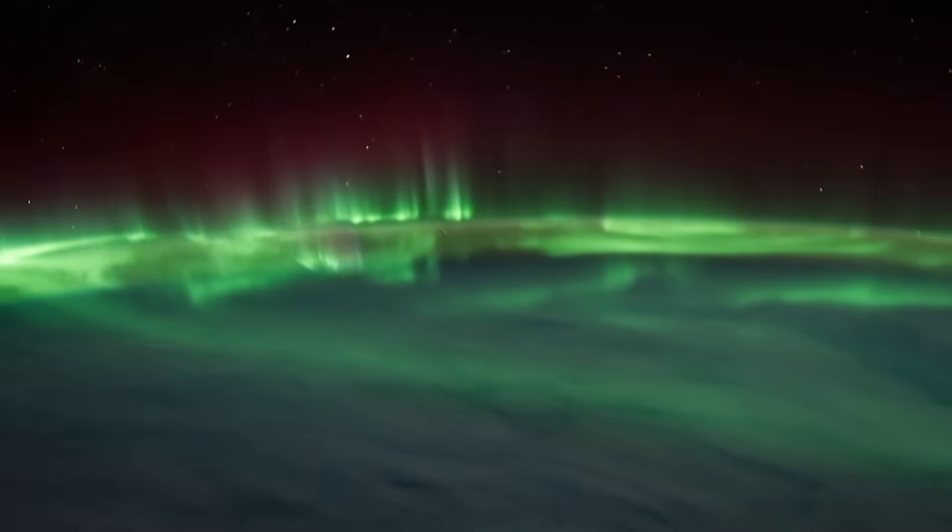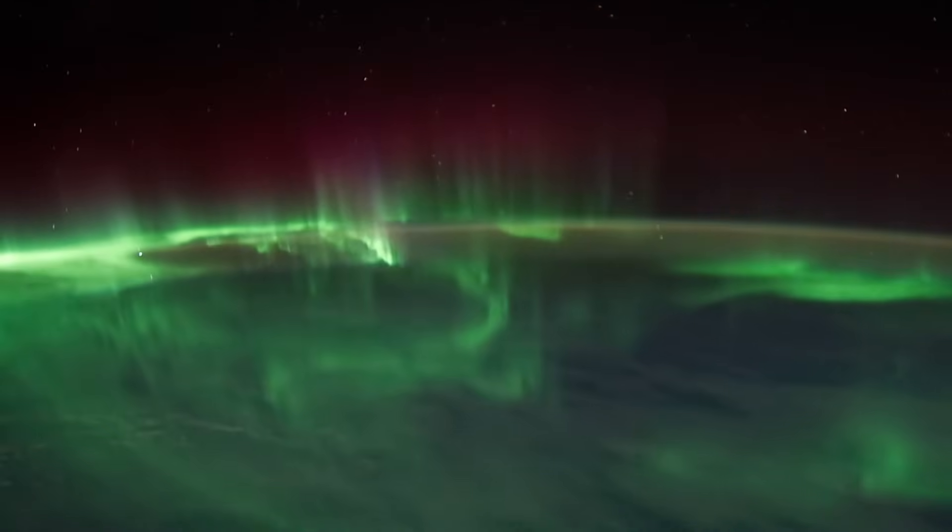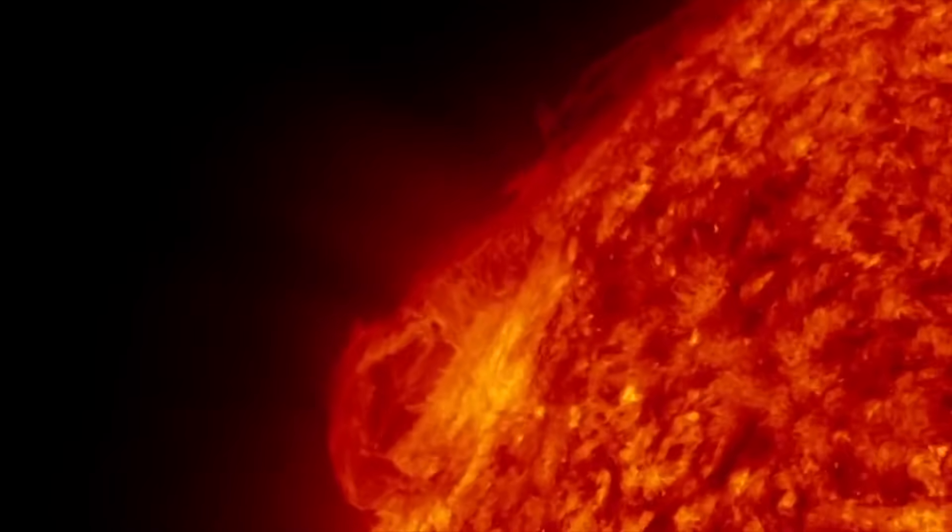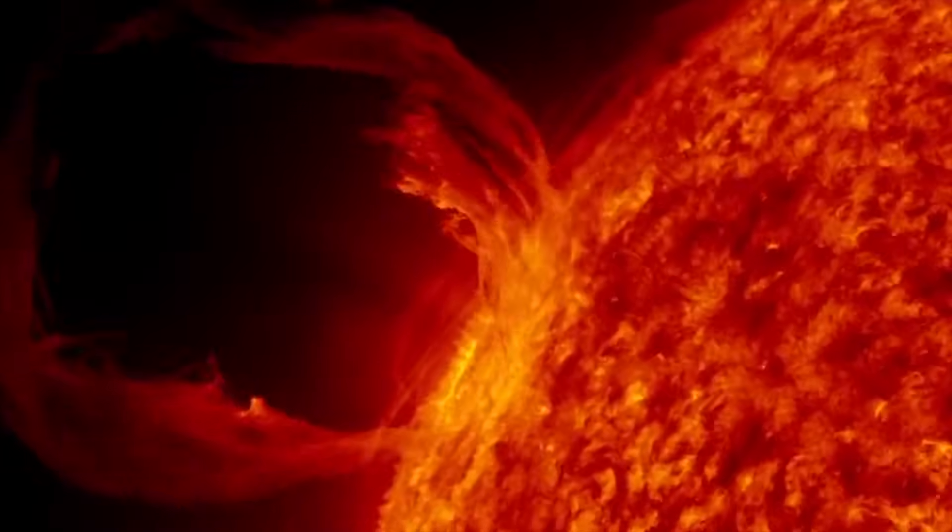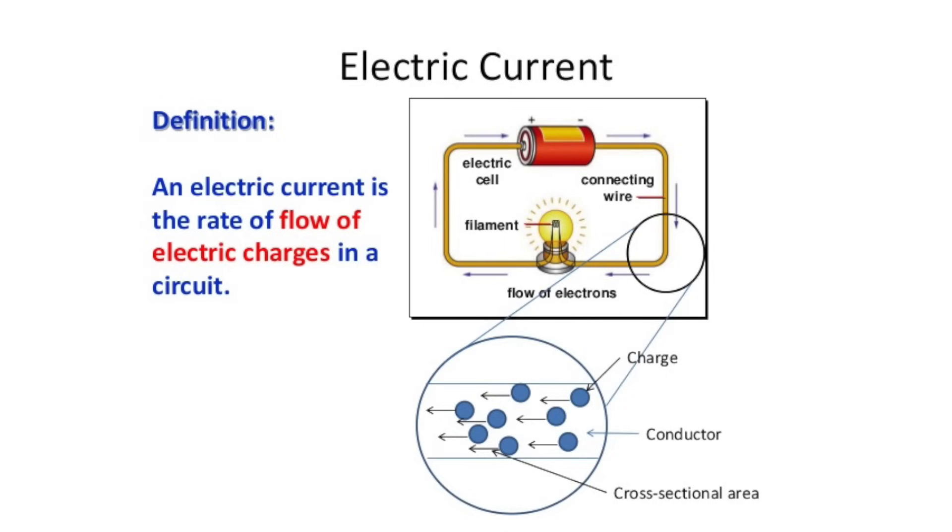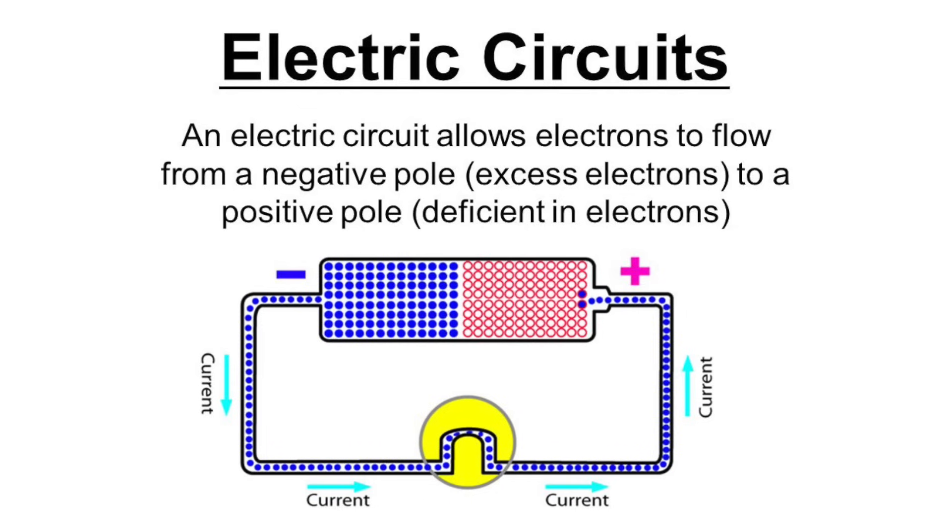In regions where plasma is active, sheets and filaments of charged particles flow, as we can see in the auroras and solar prominences. Flows of charged particles are electric currents. Persistent currents close in circuits, otherwise the charged particles would accumulate and shut down the flow.